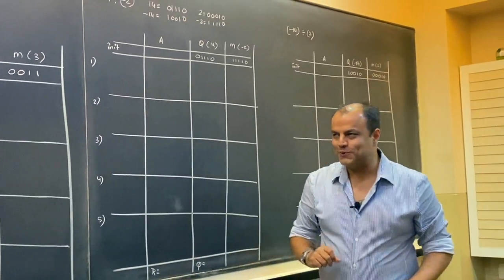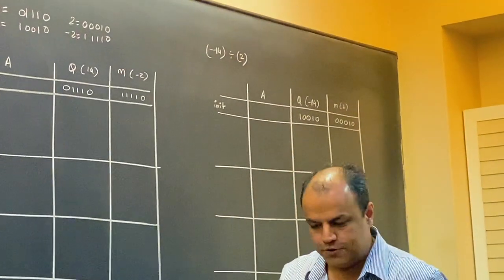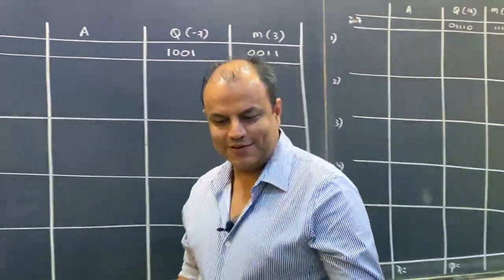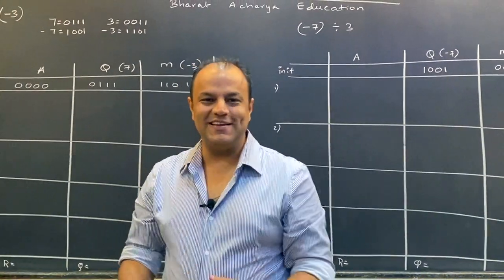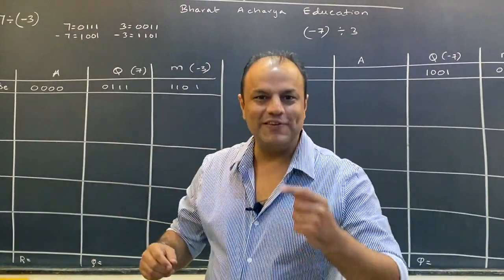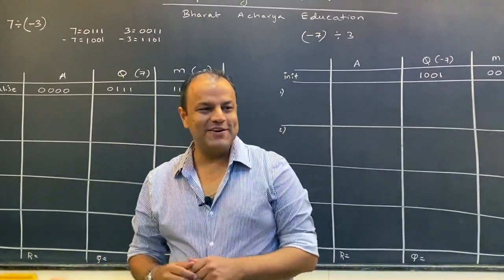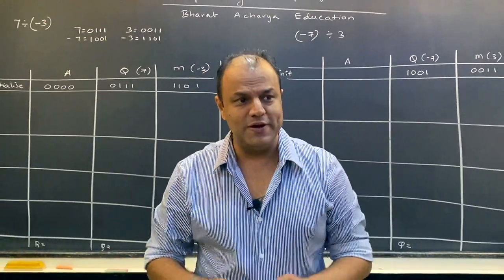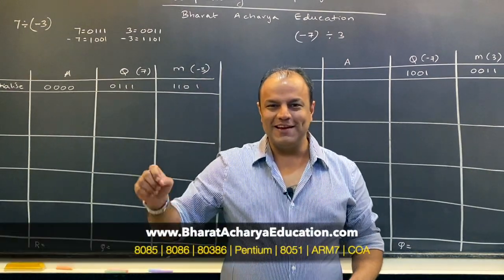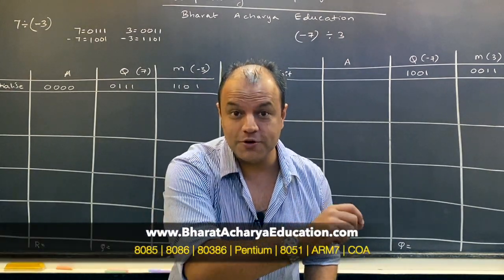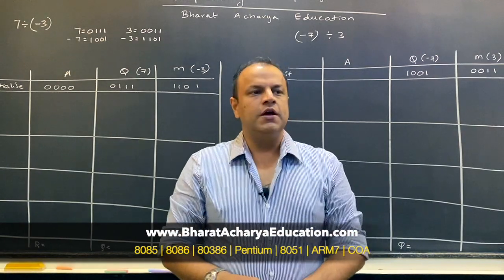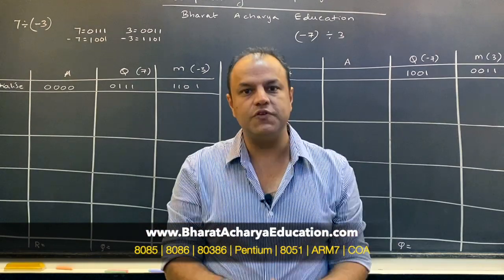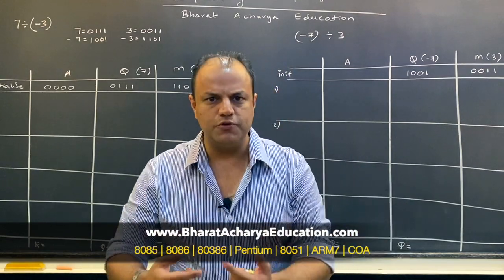There is a particular reason I've taken 14 divided by minus 2 — when you do this algorithm with any number which is a power of 2, something very interesting happens, which I'm going to show you. Then again the reverse: minus 14 divided by 2. I could have drawn the whole solution and then explained, but that's not fun. The fun is to do it together — at each step I'll pause and you're going to give me the answer. If you want to learn all of COA, come to my website www.bharatacharyaeducation.com.